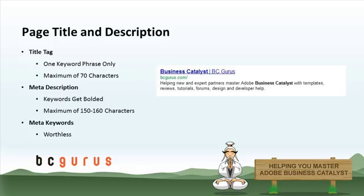The first and most important element in on-page optimization is the page title. You want to include your keyword phrase within the title tag, and you only want to include one phrase. Make sure that you're not going over 70 characters in the title tag, otherwise Google will cut off the title itself.